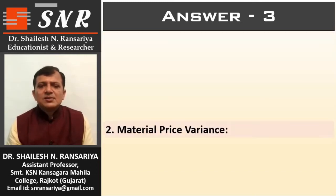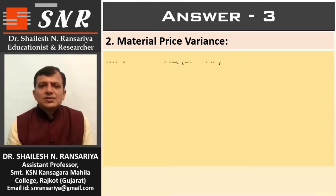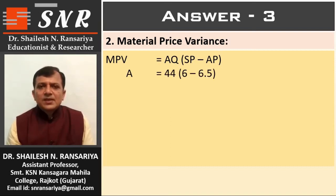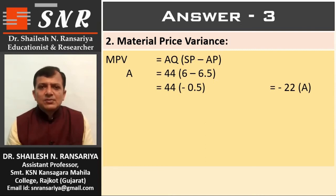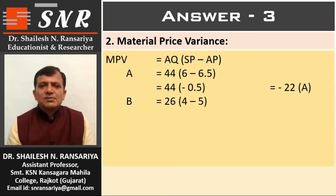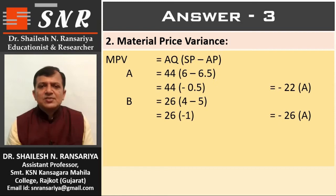Number 2: material price variance. The formula is AQ × (SP minus AP). For material A: AQ 44 × (6 minus 6.5) = 44 × minus 0.5 = minus 22, adverse. For material B: 26 × (4 minus 5) = 26 × minus 1 = minus 26, adverse.